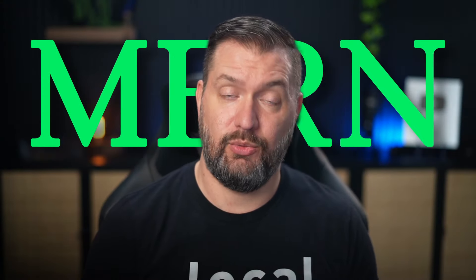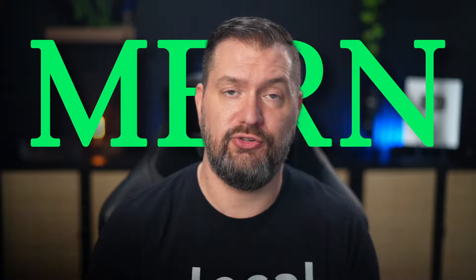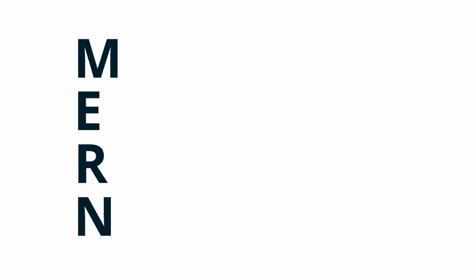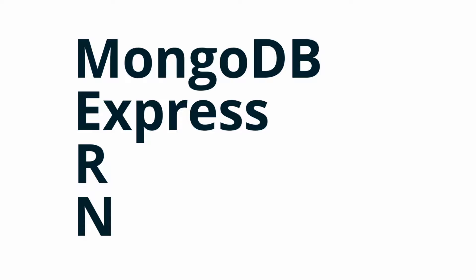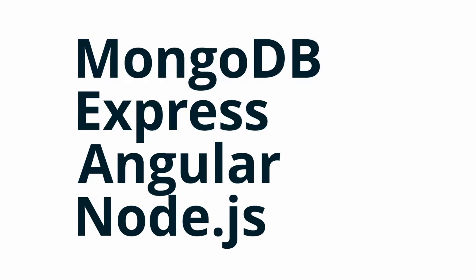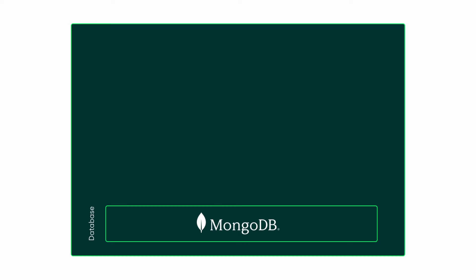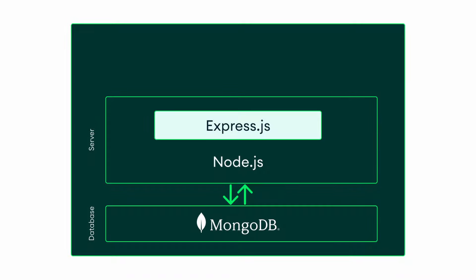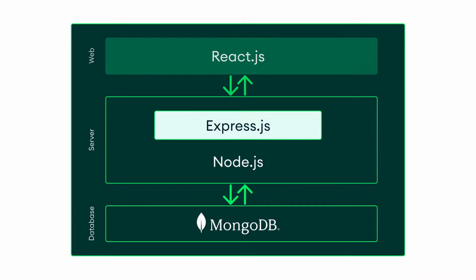So what is the MERN stack? Stack refers to a combination of technologies. The MERN stack consists of MongoDB, Express, React, and Node.js. There are other similar variants like the MEAN stack, which swaps out React for Angular. In the MERN stack, we use MongoDB to create the database layer, Node.js and Express to make up the middle or application layer, and React to implement the presentation layer.